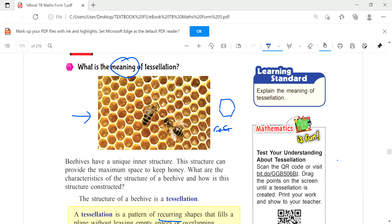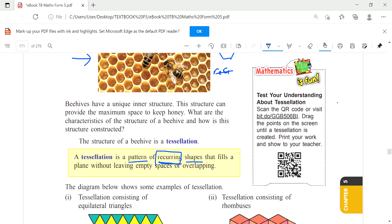Recurring here, recurring there - there is a pattern, a recurring shape that fills a plane without leaving empty spaces or overlapping. So that is the meaning of tessellation. So this beehive is a tessellation.